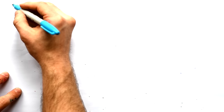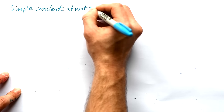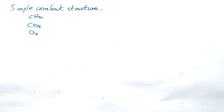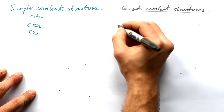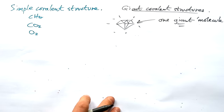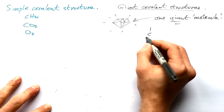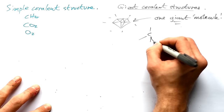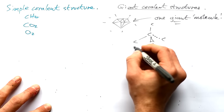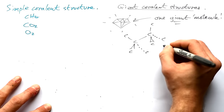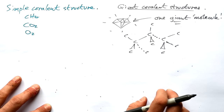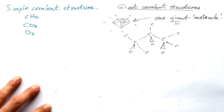The molecules we've drawn are examples of simple covalent bonding — a simple covalent structure. Methane, carbon dioxide, and oxygen are all simple covalent structures. However, you can also get giant covalent structures. A diamond is effectively one giant molecule. Inside, we have a bunch of carbons each bonded to four more carbons, each of those bonded to another four, and so on — resulting in a giant tetrahedral grid of carbon atoms, which we call a giant molecular structure.